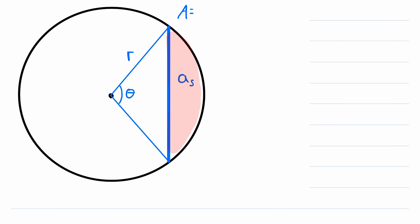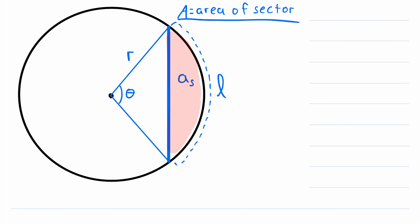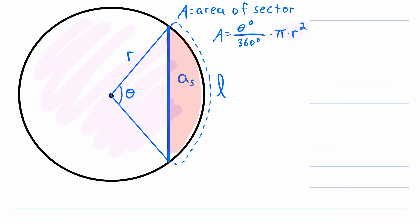We'll start off with the area of the sector, and we'll call that capital A. Let's also give a name to the length of this arc — we will call the length of this minor arc L. There are two ways we can find the area of a sector. The area of the sector equals theta degrees divided by 360 degrees, multiplied by pi times r squared. The other, more elegant formula is that the area of the sector equals L times r divided by 2.